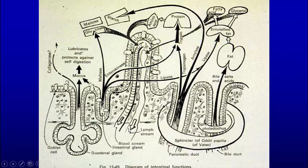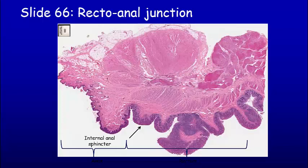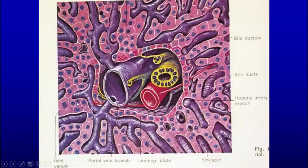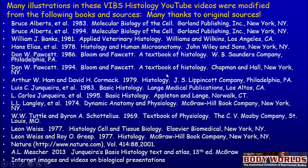At the other end, the anal opening, we see the colon with lots of goblet cells and then we pick up skin as you get to the anal opening. In the liver, we saw the triad — as mentioned, you also have lymphatics and nerves, but the three main things are the portal vein, the artery, and the bile duct.